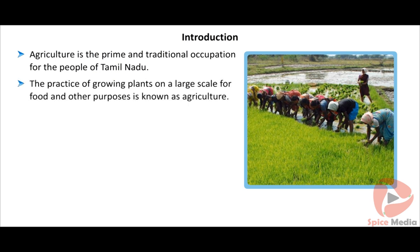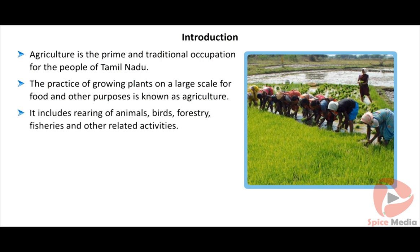The practice of growing plants on a large scale for food and other purposes is known as agriculture. It includes rearing of animals, birds, forestry, fisheries, and other related activities. The methods of growing crops are classified into the following types.